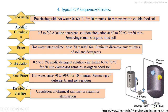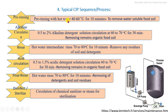In this cleaning process, the first step is the pre-rinsing process with hot water, which is circulated through the processing vessels or the processing line at 40 to 60 degrees Celsius for 10 minutes continuously, to remove the maximum amount of food soil.